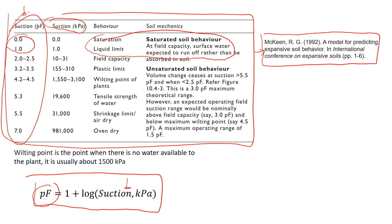At some point when suction increases, and you see suction will increase here to very high values like 1500 to 3000, this is called wilting point of plants. This means that there is no moisture for plants to take from the soil. Usually, we assume that it is about this value. It starts this wilting point about 1500 kPa of suction.